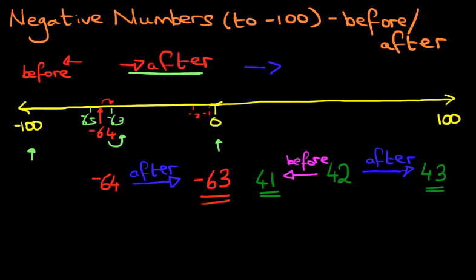Now how about we do the same with the negative number? We've got minus 64. And we want to work out the number before minus 64. Now don't forget. The number before means we have to go this way. We've got minus 64. We're going this way. The answer is minus 65. Minus 65.